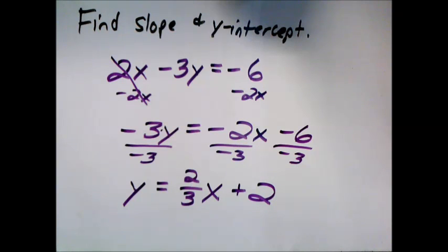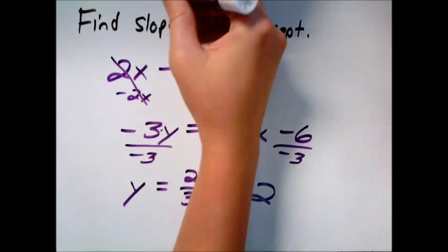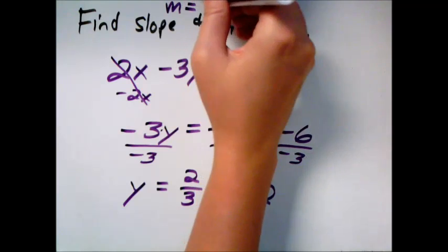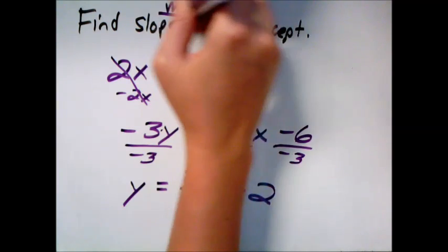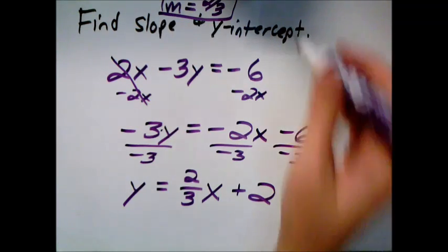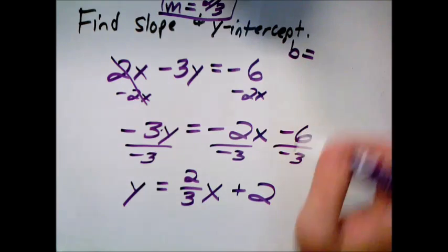So now we can write down, well, the slope appears to be 2 thirds, and the y-intercept is 2.